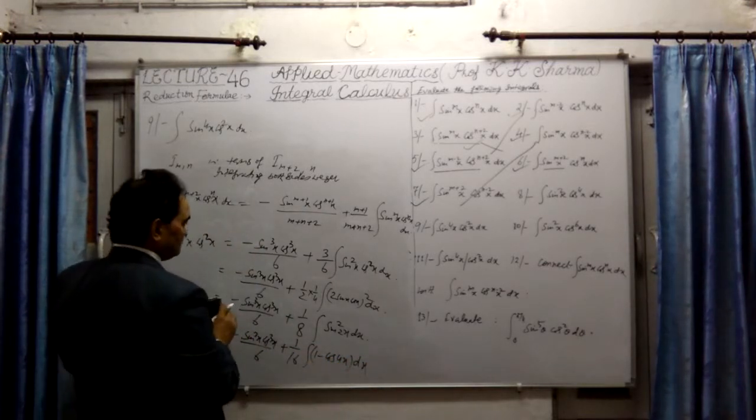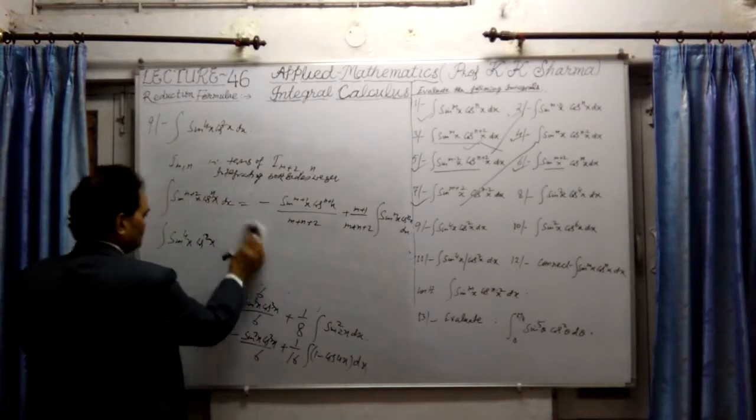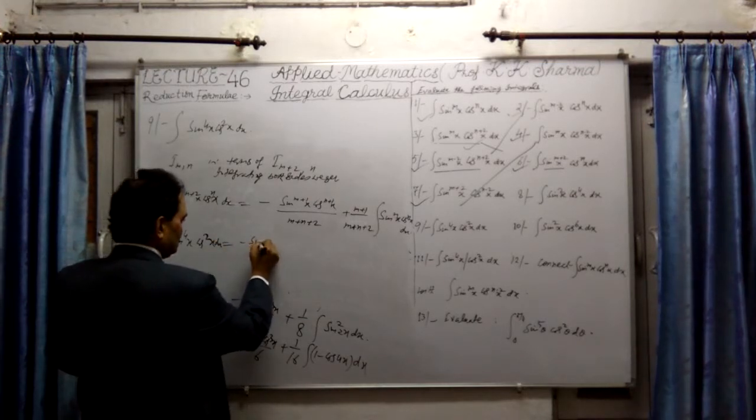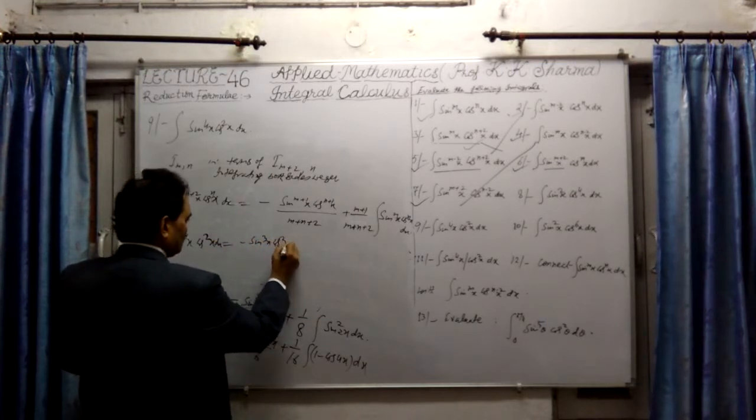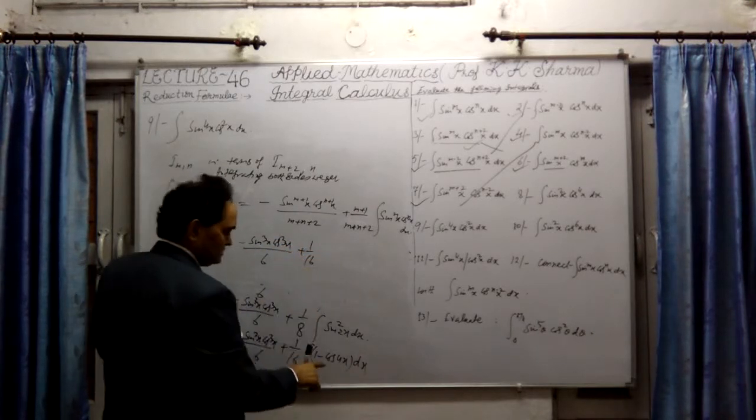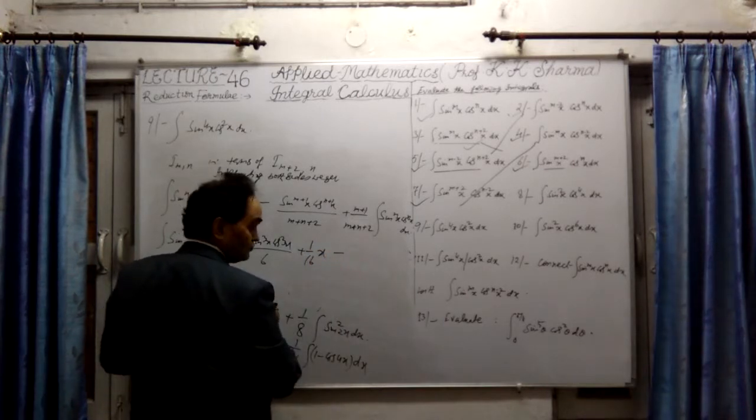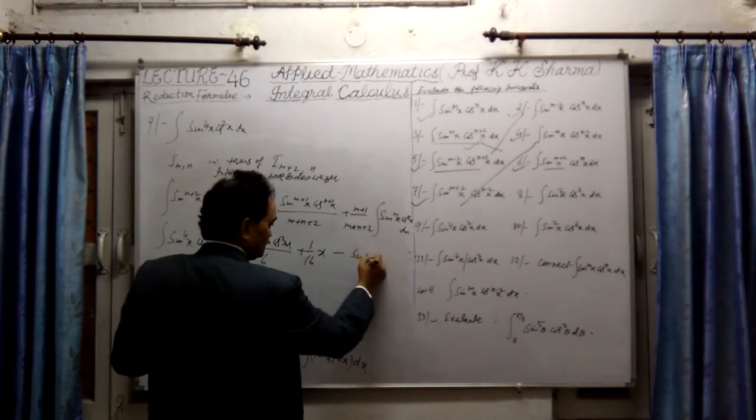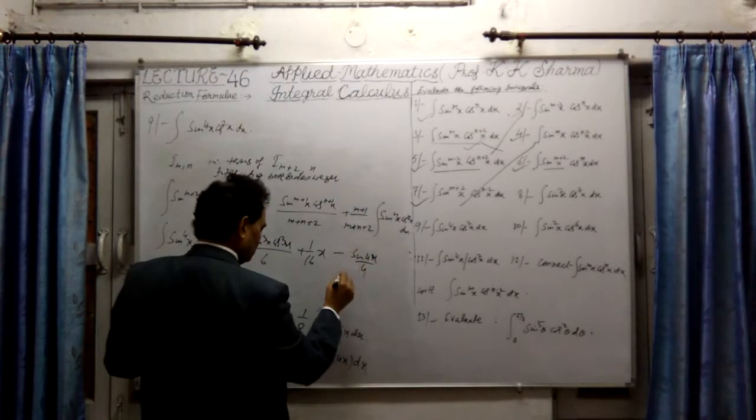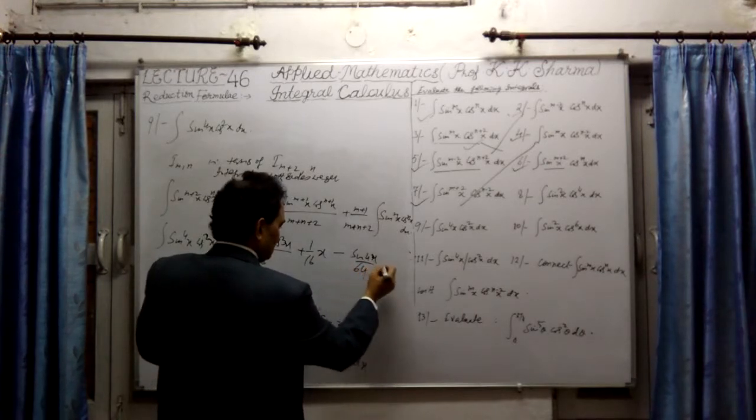Now this further, let me write here integrated. This will be equal to minus sine cube x cos cube x upon 6, plus sine 1.16. It gives us x first minus sin 4x upon 4, times 4x upon 4, and it is 1.16, which gives us 1.64.